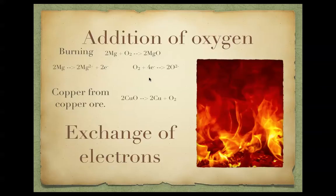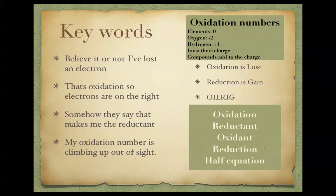The next slide involves a mnemonic song. It goes: 'Believe it or not, I've lost an electron. That's Oxidation, so electrons are on the right. Somehow they say that makes me the Reductant. My Oxidation number is climbing up out of sight.' This song describes exactly what happens in Oxidation and the half equation.